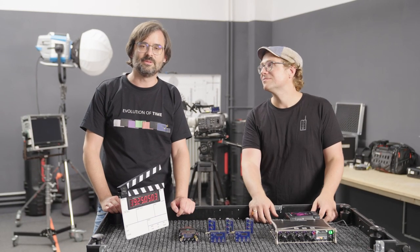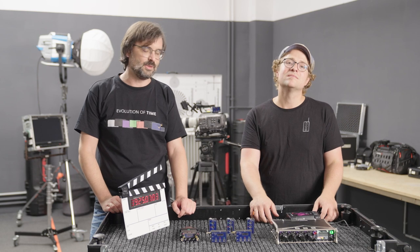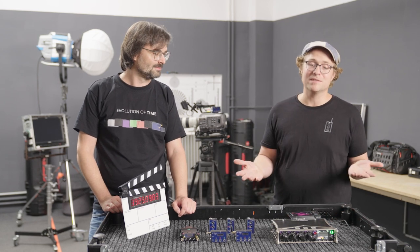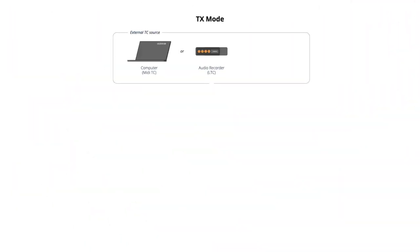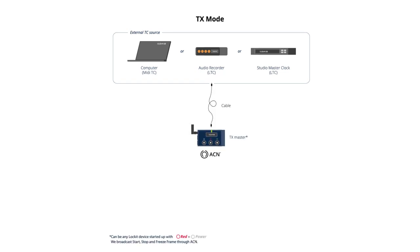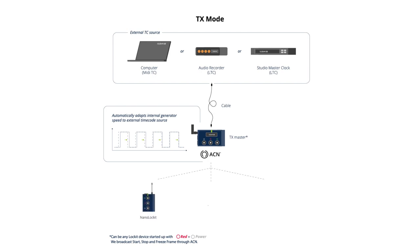Now with the new TX mode we pay tribute to frequent customer requests. You want other devices like a sound recorder to act as the master clock on set. Besides an audio recorder, this can be a computer or a studio master clock. If you start your locket device in TX mode and ingest timecode from an external source, it will automatically tune the internal generator speed to the external timecode source.